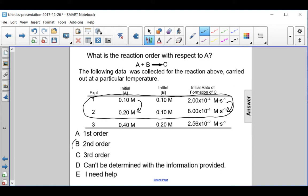We call that second order. So we doubled the concentration to some power of N is equal to the rate of the reaction. In this case, it quadrupled from 2 to 8 times 10 to the minus 4, so N is 2. Second order with respect to A.